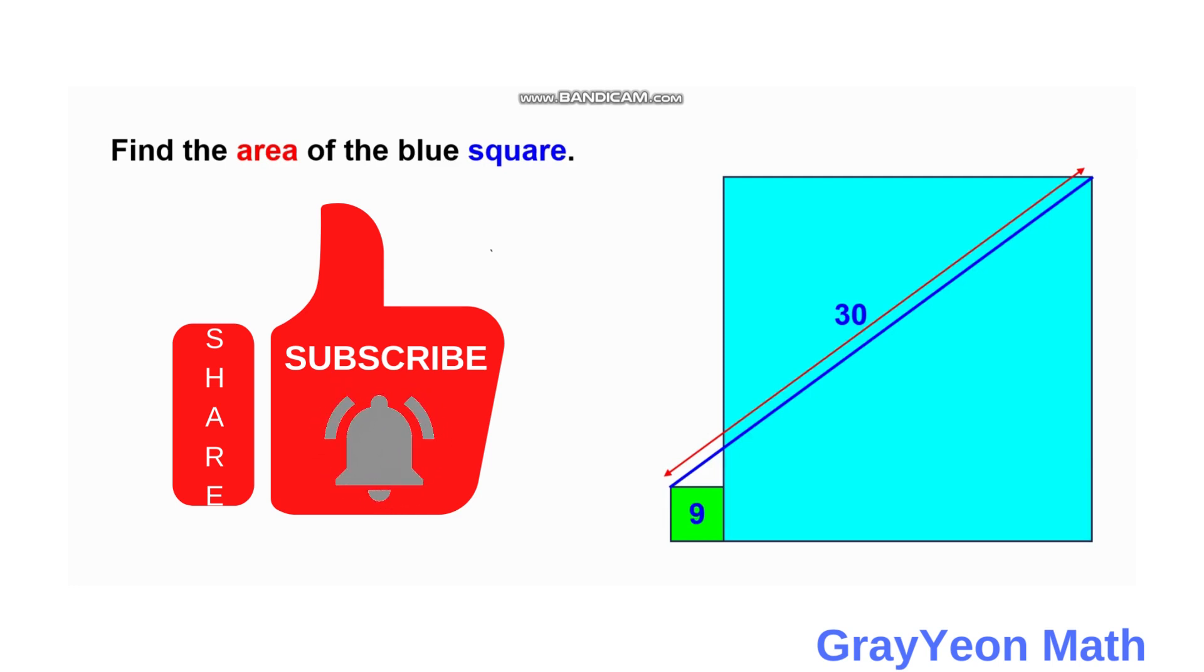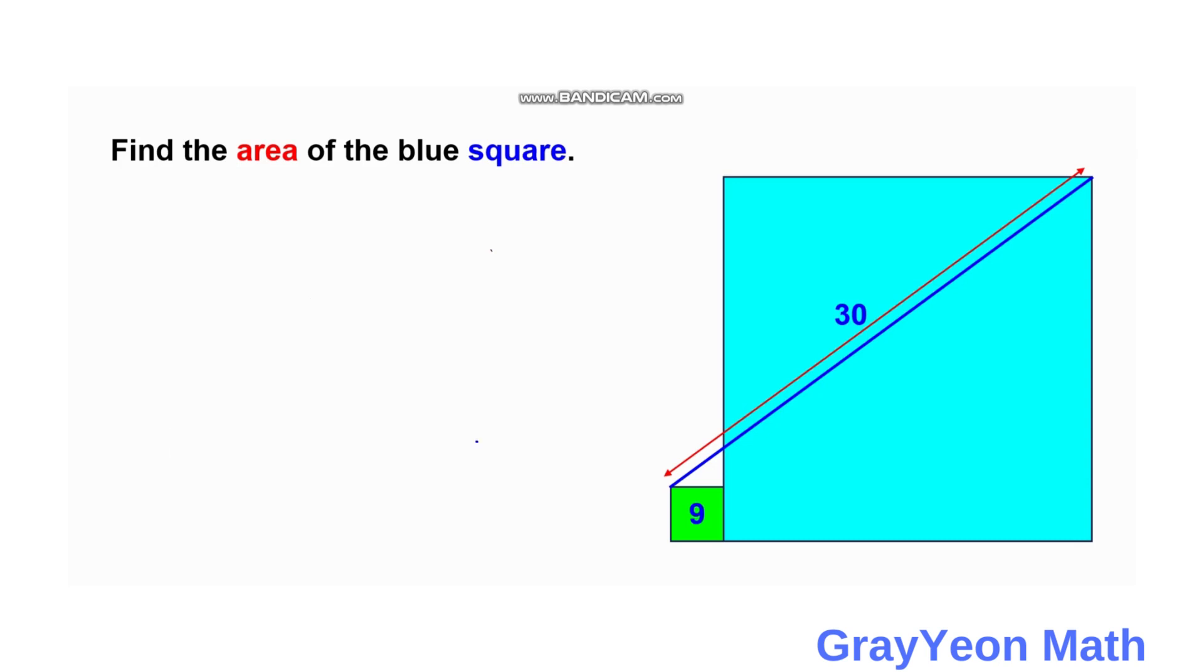Welcome to GrayYeon Math. We are asked to solve this problem. We have a blue square and a green square beside it. The green square has an area of 9 square units, and a line is drawn from the top of the green square to the top of the blue square measuring 30 units. We are required to find the area of the blue square.